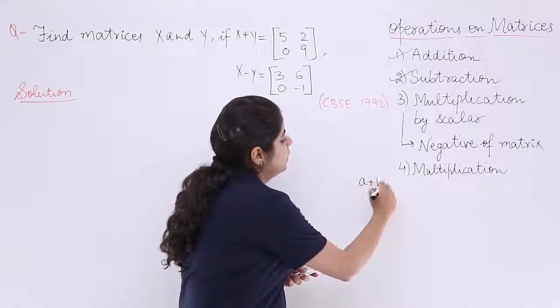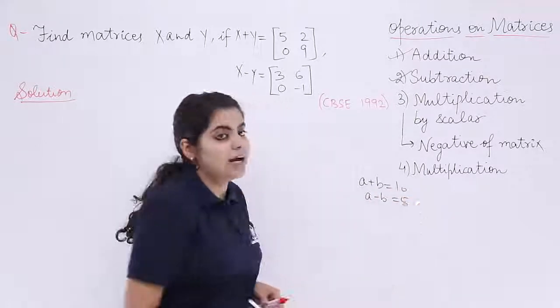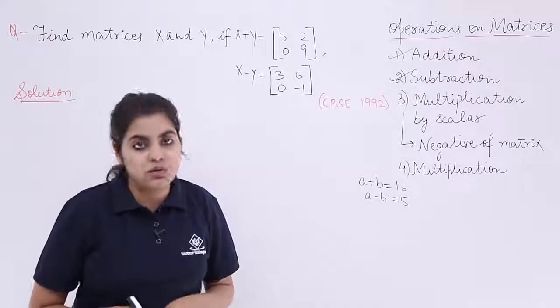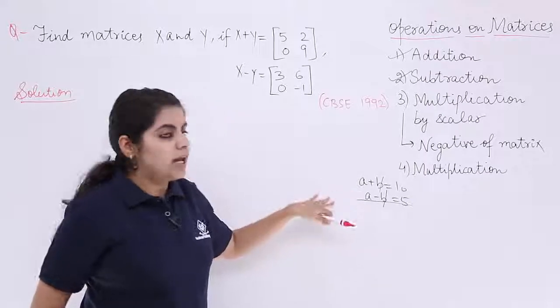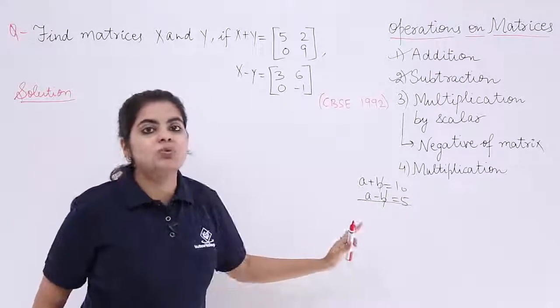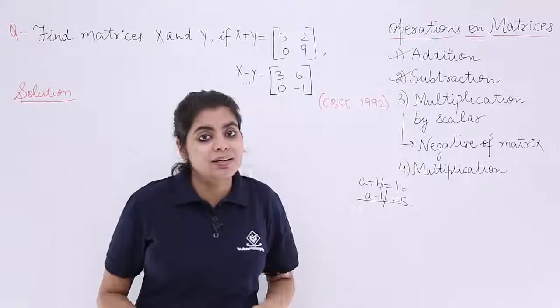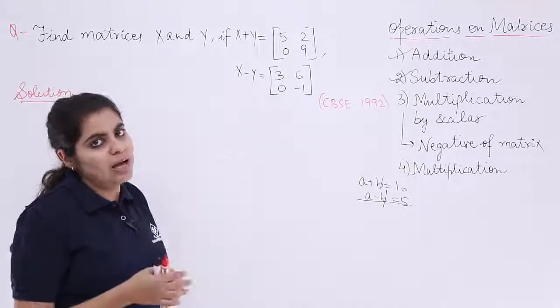Suppose I was being given a plus b is equal to 10, a minus b is equal to 5. I used to use these two equations to find out the values of a and b. I used to add these equations and then 2a was there, it was 15, I used to get a and then substitute it in one of these equations. Similarly, here also if the same thing happens for matrices. Let's see.